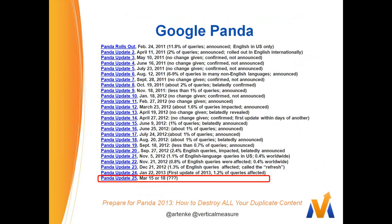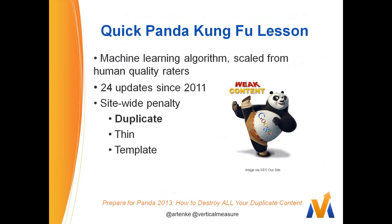There have been 24 updates, and tomorrow or Monday is going to be the 25th. Panda is a machine learning algorithm scaled from human quality raters. A guy named Navi Panda at Google took a bunch of quality raters, and they actually rated a bunch of different sites based on different criteria — what they liked, what they didn't. They collaborated on a whole bunch of data, and Google has been very happy with it. It's important to note that Panda is a site-wide penalty.